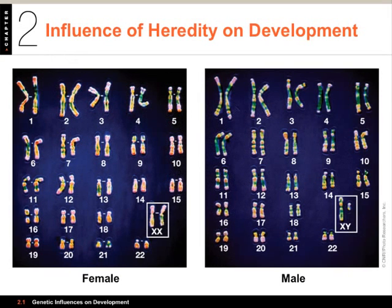The first thing we want to do is talk about the effects of heredity on development. What you have here are chromosomes - these rod-shaped structures inside the cell. The typical human cell contains 46 chromosomes and 23 pairs, numbered here from 1 to 22 with the 23rd pair boxed. The 23rd pair shows the sex of the child: two X's on the left is female, and an X and a Y on the right is male.